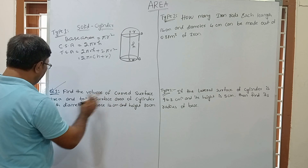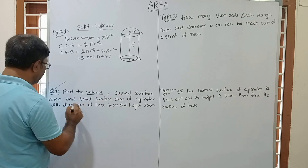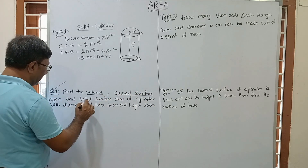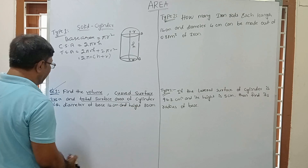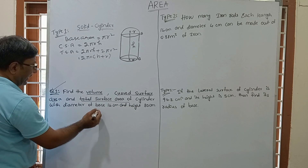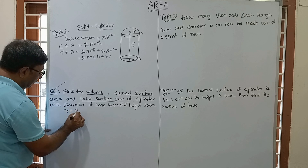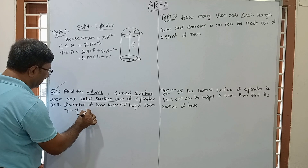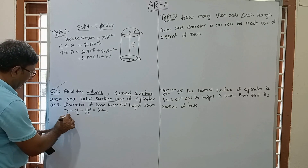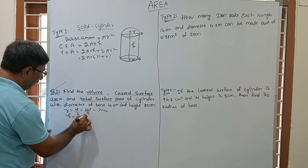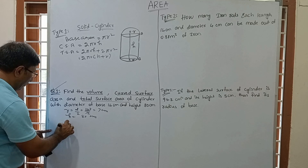Now see the first question: Find the volume, curved surface area, and total surface area of a cylinder with diameter of base 14 cm and height 80 cm. First, you see what is given — diameter of base. Radius equals diameter divided by 2. If diameter is 14 cm, then radius will be 14/2 = 7 cm. Height of cylinder is also given as 80 cm.